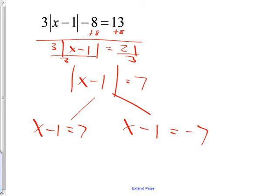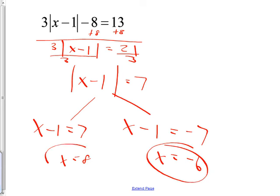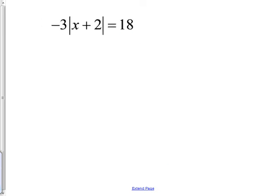You have to write two equations and solve both. Add one to both sides: x equals eight. Add one to both sides of the other: negative seven plus one makes negative six. There are your two answers. Raise your hand if you're comfortable with that kind. I don't need to even practice the next one because it's just like it.